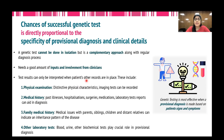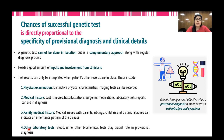Test results can only be interpreted when the patient's other records are in place. These patient records include physical examination — involving distinctive physical characteristics and imaging tests — medical history including past illnesses, hospitalizations, surgeries, medications, and laboratory test reports that can aid in diagnosis. Family medical history, which includes medical issues with parents, siblings, children, and distant relatives, can indicate an inheritance pattern of the disease. Other laboratory tests including regular blood, urine, and biochemical tests can also play a crucial role in provisional diagnosis. All of these taken together are very important to reach a correct diagnosis.